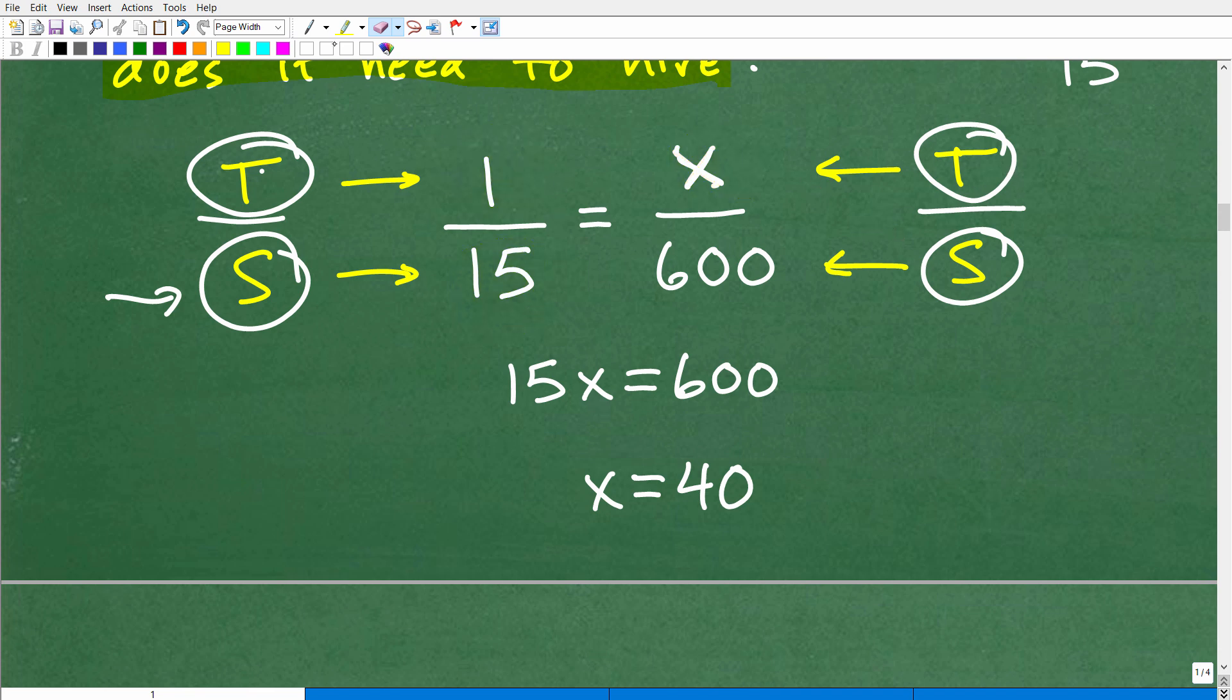So this is how you set up a proportion. How do we solve this? We use the cross product. This is a proportion and we're missing this value. So 15 times X equals 15X, which equals 1 times 600, which is 600. To solve this equation, I divide both sides by 15, and I get X equals 40. What is X? That's the number of teachers needed. So you need 40 teachers for this school size of 600 to have a consistent 1 to 15 student-teacher ratio.